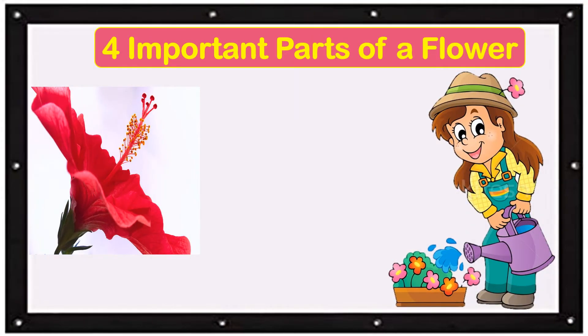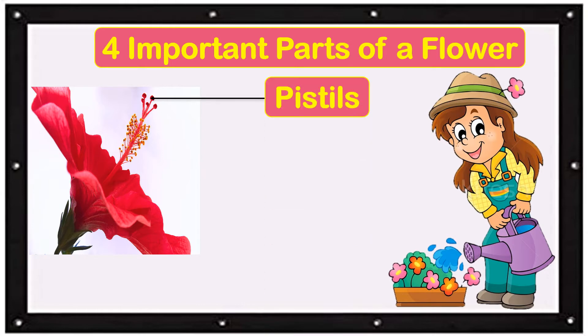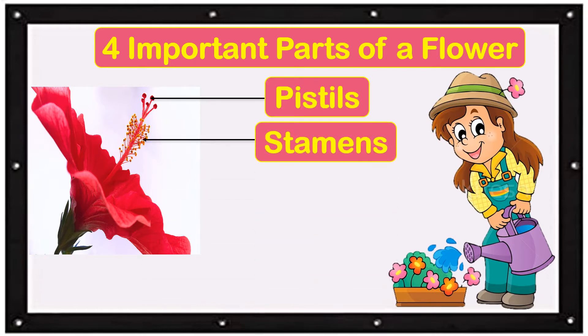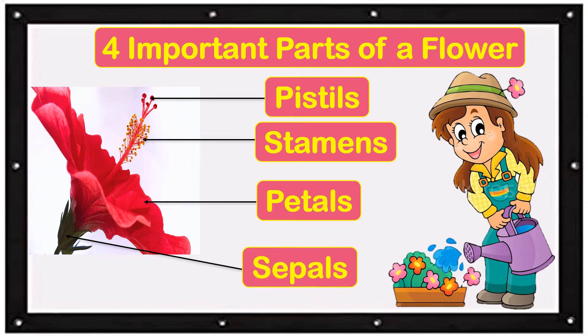Last time, we discussed about the four important parts of a flower. First, we have pistils. Another part are the stamens. We also have petals and sepals.